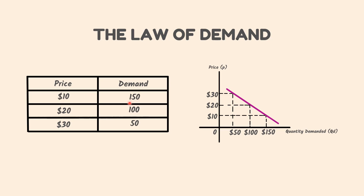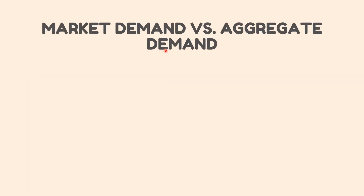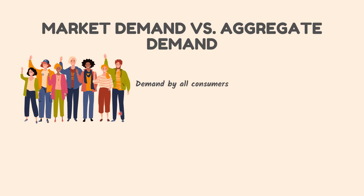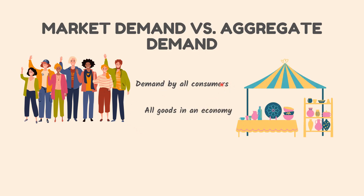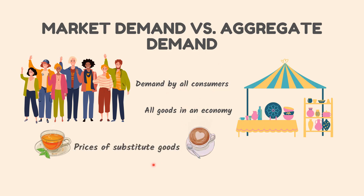Market Demand vs Aggregate Demand: The market for each good in an economy faces a different set of circumstances, which vary in type and degree. In macroeconomics, we also look at aggregate demand in an economy. Aggregate demand refers to the total demand by all consumers for all goods and services in an economy across all the markets for individual goods. Since aggregate demand includes all goods in an economy, it is not sensitive to competition or the substitution of goods, nor to changes in consumer preferences between various goods. Demand in individual goods markets, however, can be affected by these factors.